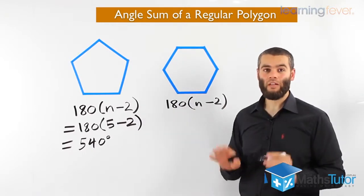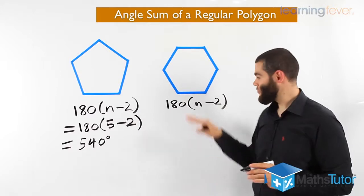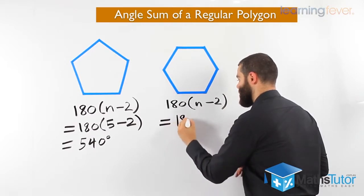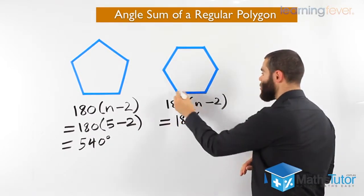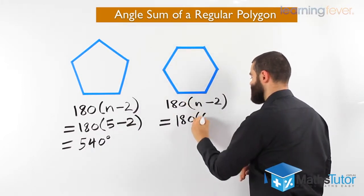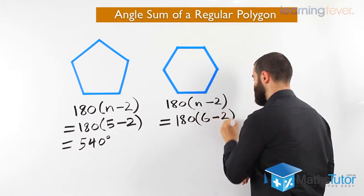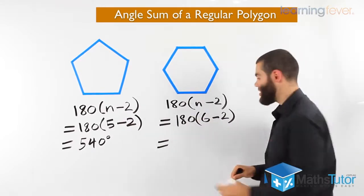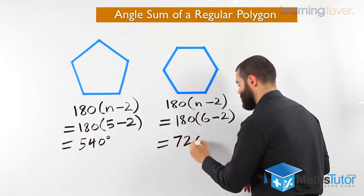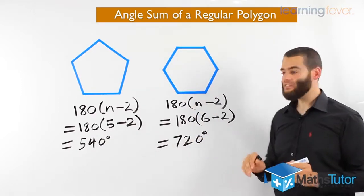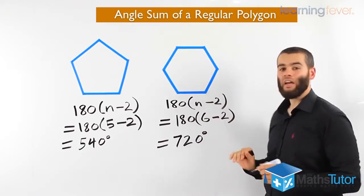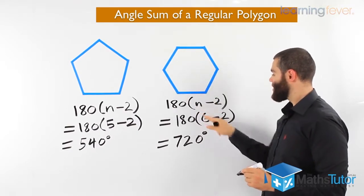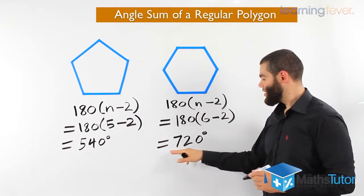In case you make a mistake, you may get marks for showing your working out — the majority of times you will get marks for showing your formula and working out. So we have our formula: 180 times (n minus 2). n is the number of sides, which is six. Six take away two is four, four times 180 equals 720 degrees.